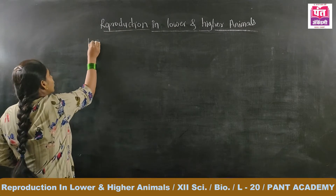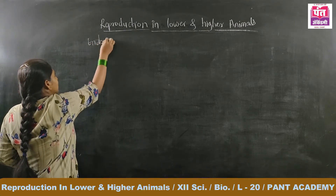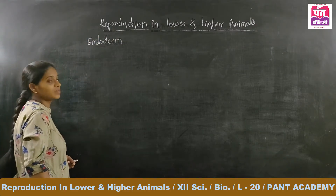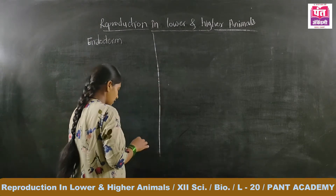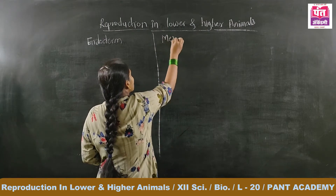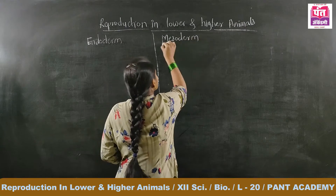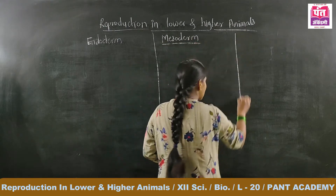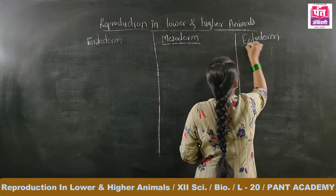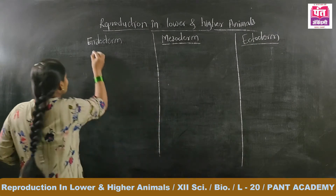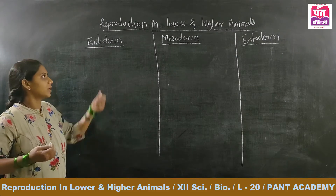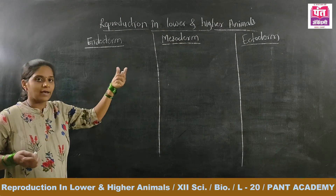Here we set up three headings: endoderm, mesoderm, and ectoderm. Under each heading, we are going to list out the organs which are exactly made up of that respective germ layer. Under endoderm we will list endodermal organs, next to that mesoderm, and the last layer is ectoderm. Under those headings we are going to study the different organs and different structures present inside our body which are made up from each specific layer.